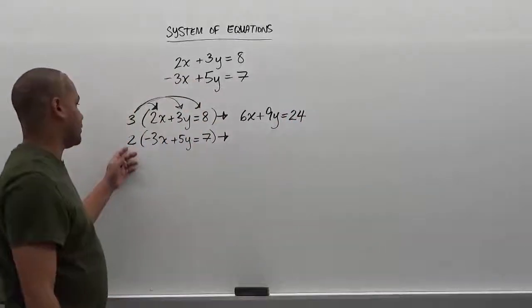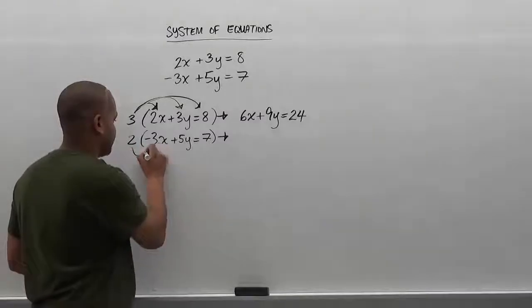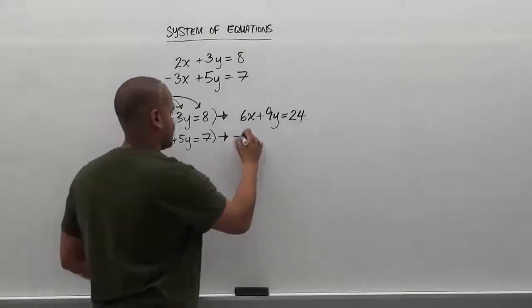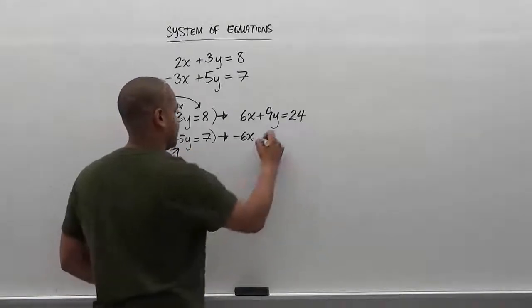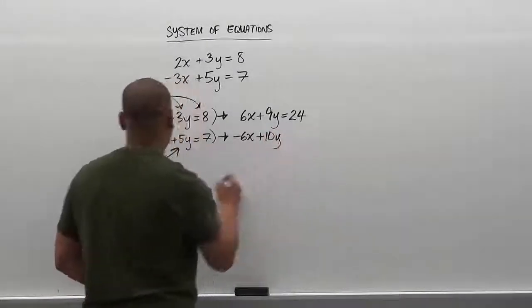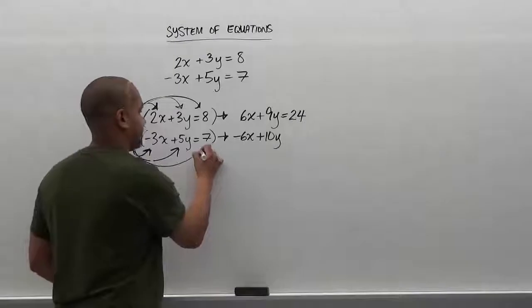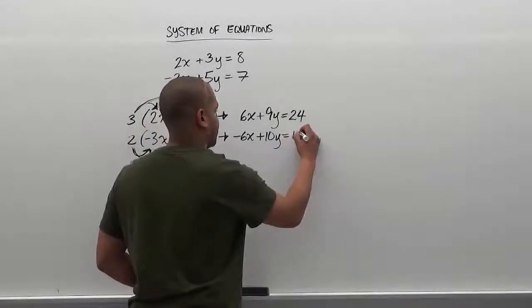For the second equation, we're magnifying it by 2, so we're going to multiply 2 times negative 3x, which gives us negative 6x. 2 times positive 5y gives us positive 10y, and finally 2 times positive 7 gives us positive 14.